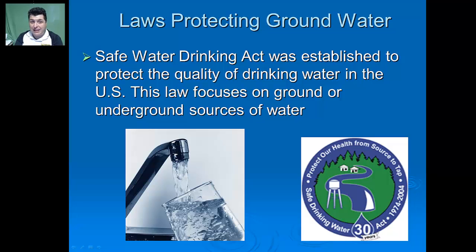Our groundwater in the United States is protected by certain laws. The Safe Drinking Water Act is the main law established to protect the quality of our drinking water, focusing on groundwater and other underground sources of water. Groundwater is our main source of drinking water in the United States and across the world. Pollution of groundwater is hard to detect, so it's best to find ways to protect this essential resource so that we'll have ample drinking water, water for sanitation, and water for agriculture well into our future.